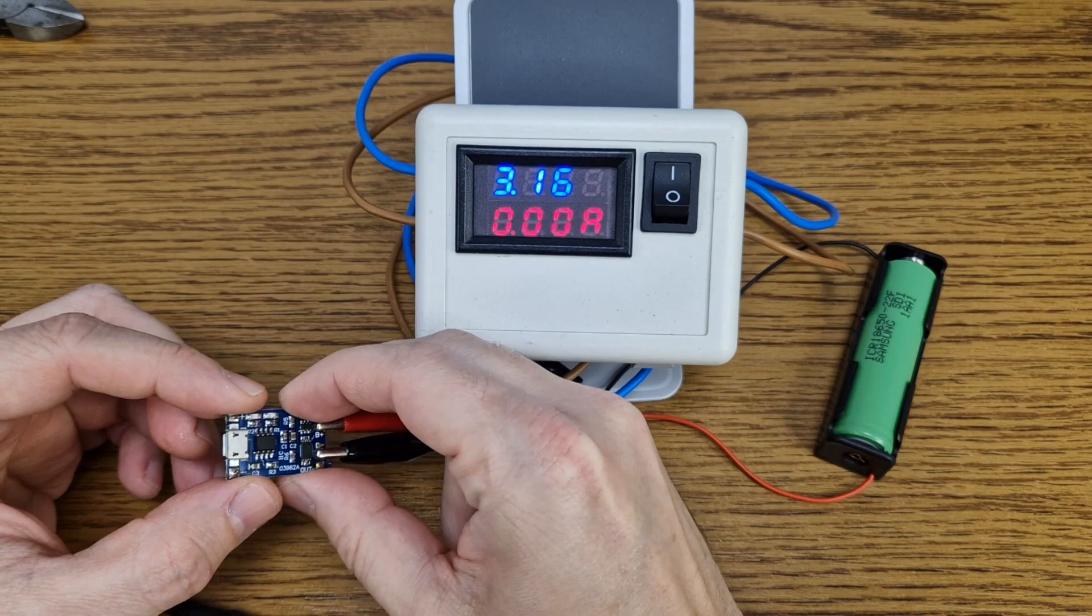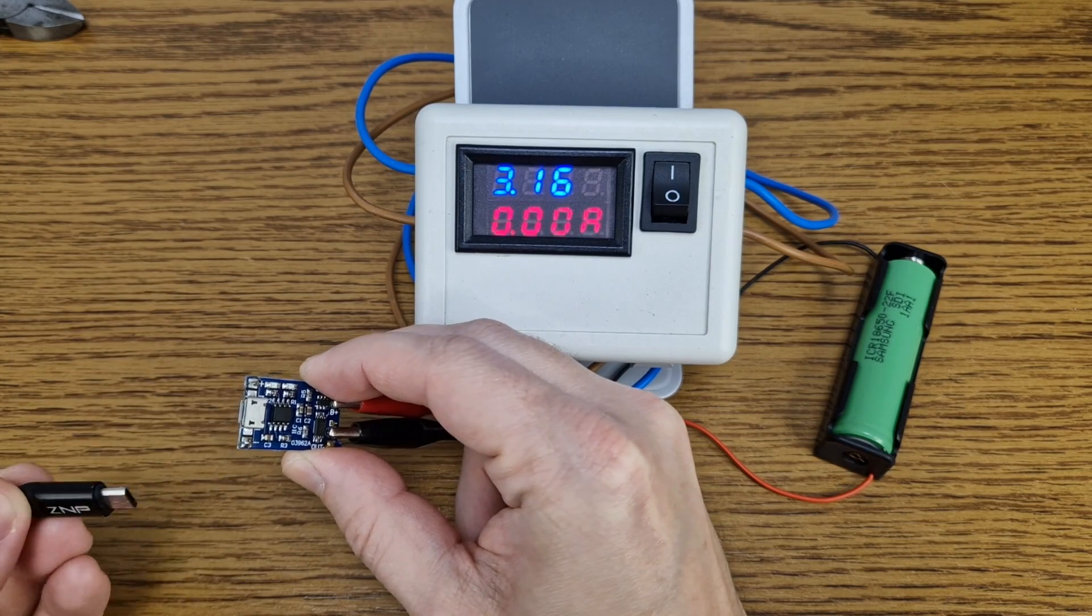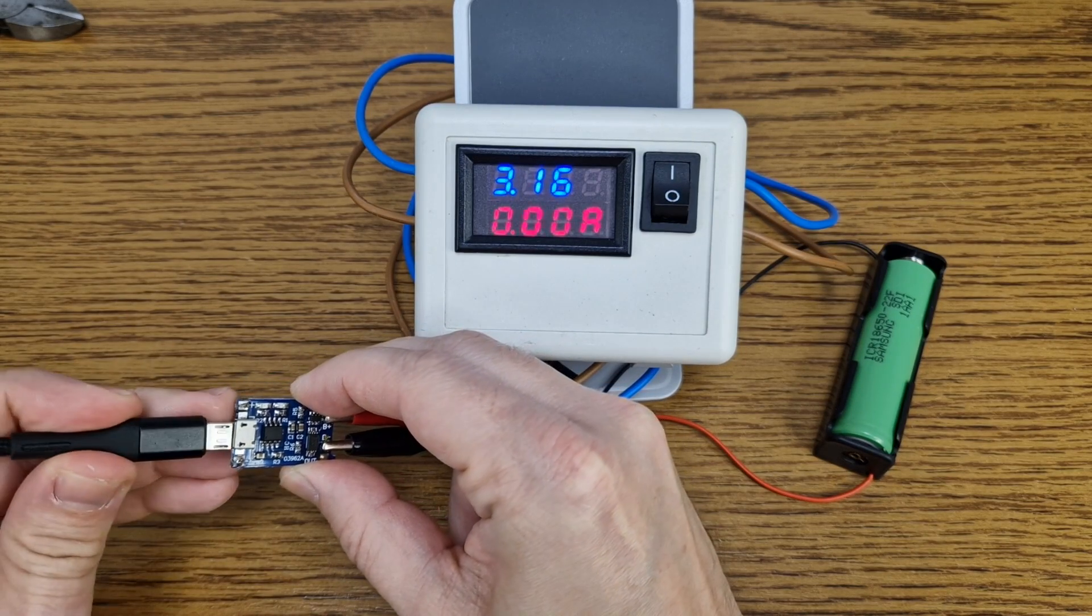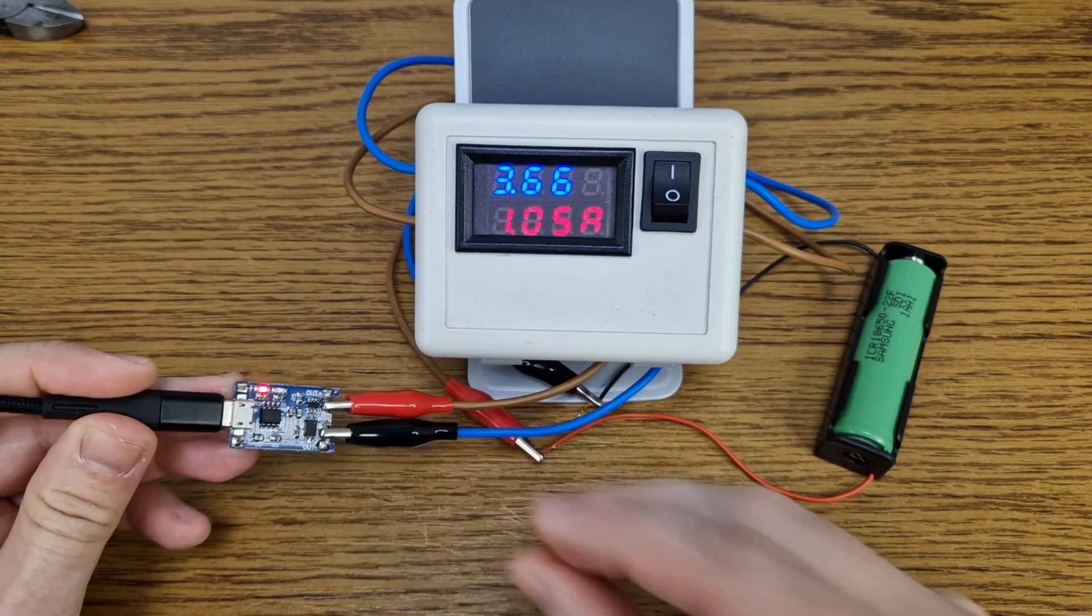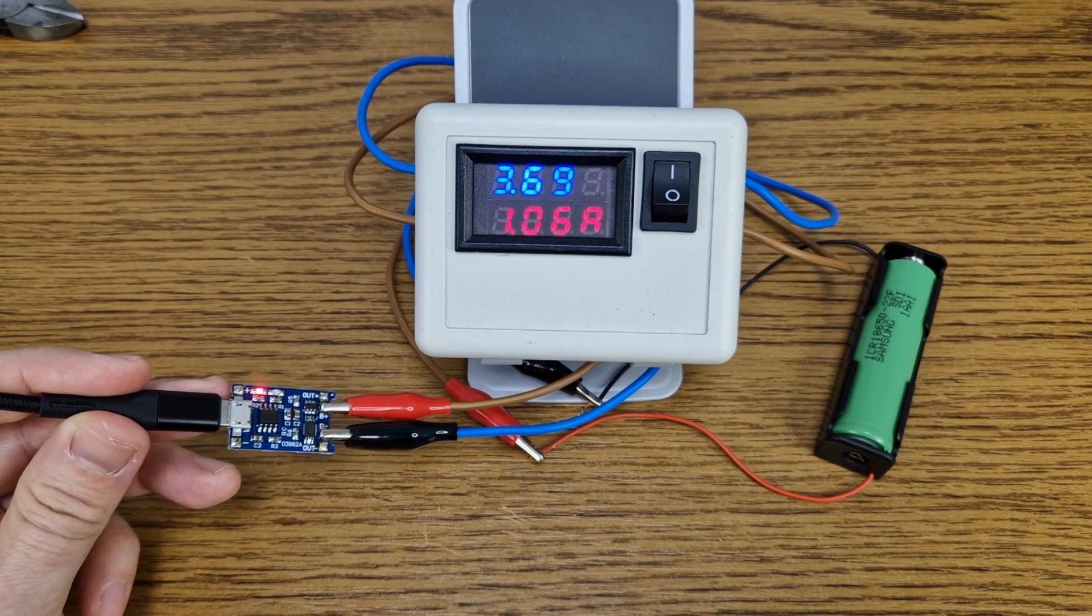Let's test it. I will use my DIY simple volt ammeter. 3.15 volts is the battery voltage, and the default charging current is 1.06 amps.